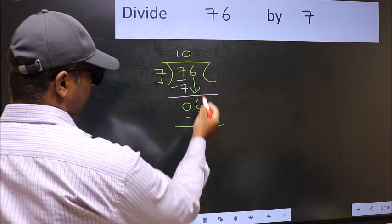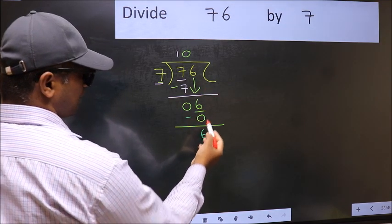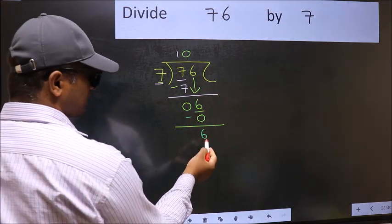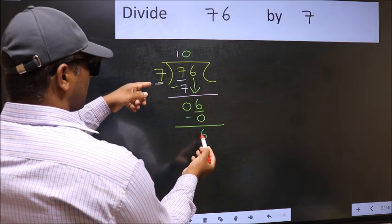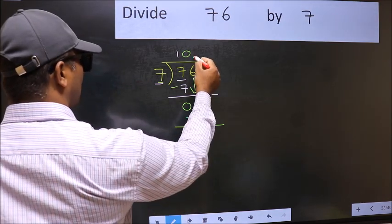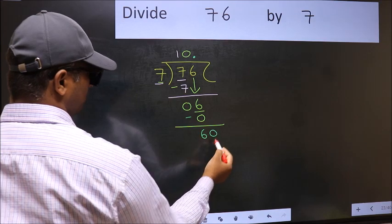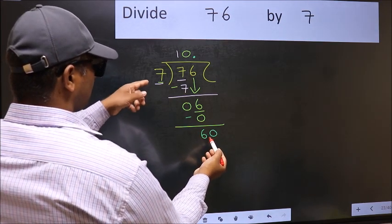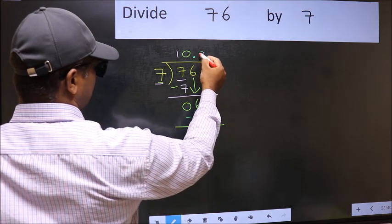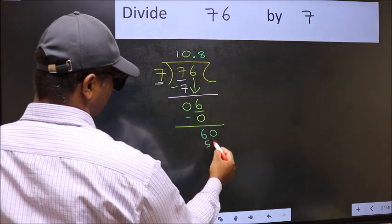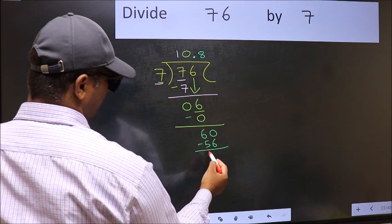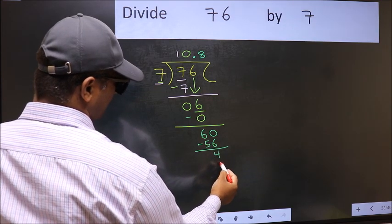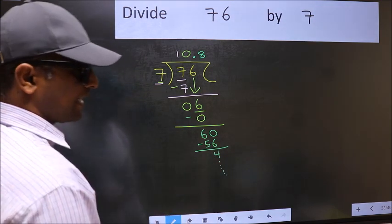Over here, we did not bring any number down. And 6 is smaller than 7. So now you can put dot and take 0. So 60. A number close to 60 in 7 table is 7, 8, 56. Now you subtract. You get 4. And continue the division. I am not doing that.